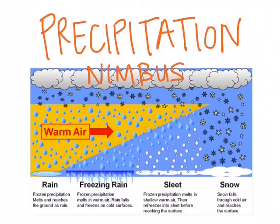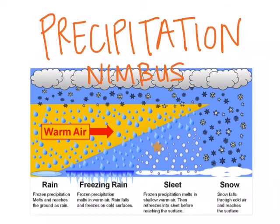As we get closer to winter, we might start to see other sorts of precipitation, which could be freezing rain, sleet, or even snow. Everything starts out as snow up at the top. The warm air causes melting. If the rain doesn't refreeze until it hits the ground, it's freezing rain. If the rain refreezes before it hits the ground, that's sleet. And if it never melts, then it's snow.